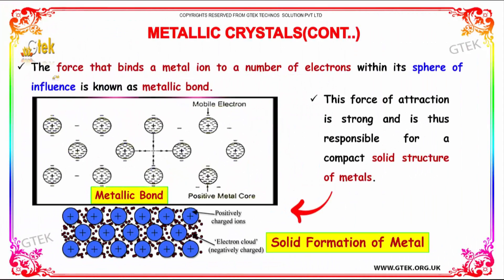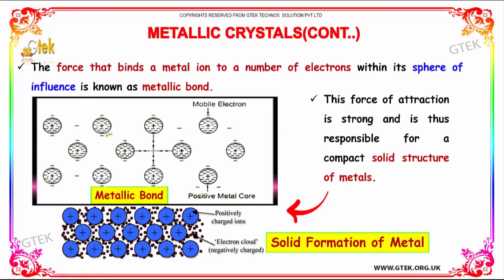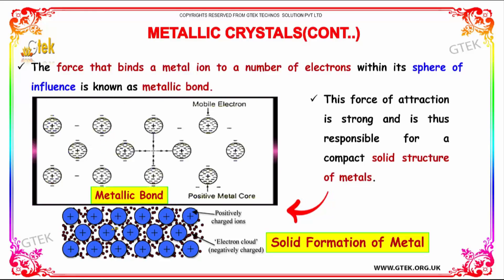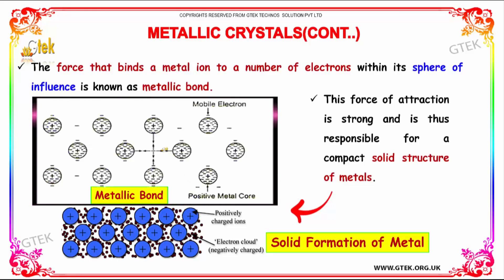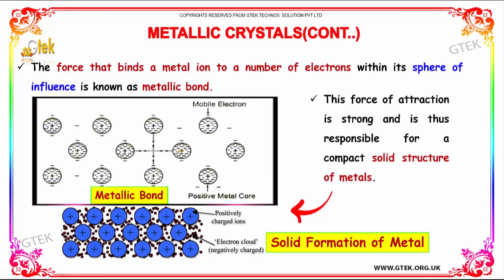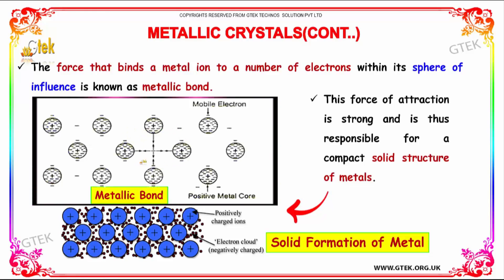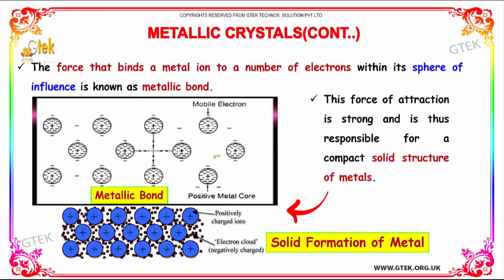The force that binds a metal ion to a number of electrons within its sphere of influence is called the metallic bond. This force of attraction is really strong and is thus responsible for a compact solid structure of metals.